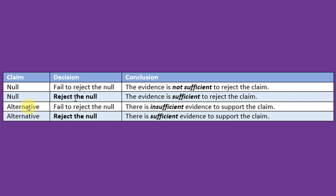If the claim is the alternative and you fail to reject the null, that means you don't have enough evidence to support the claim. If you do reject the null when the alternative is the claim, that means there is sufficient evidence to support the claim.